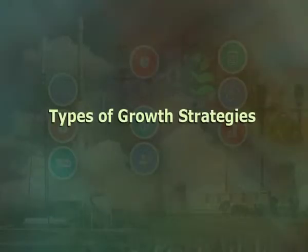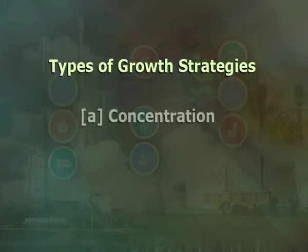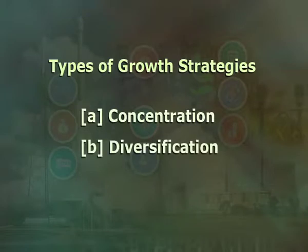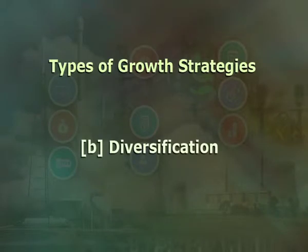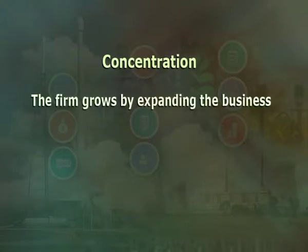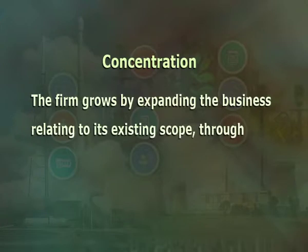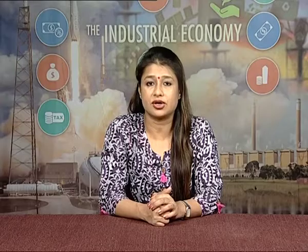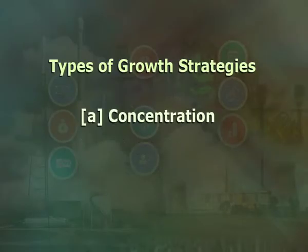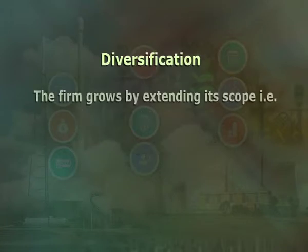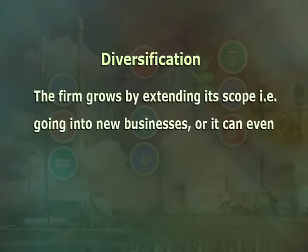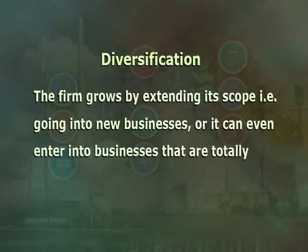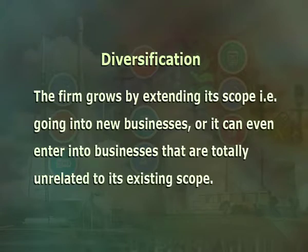There are basically two types of growth strategies: A) concentration and B) diversification. Under concentration, the firm grows by expanding the business relating to its existing scope through integrating into businesses either vertically or horizontally or both. Cost savings, uncertainty, monopoly motives, and technological interdependence can be incentives to integrate. Under diversification, the firm grows by extending its scope into new businesses or even businesses totally unrelated to its existing scope.